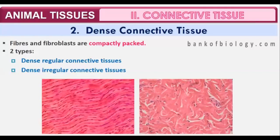Today we are going to start with the dense connective tissue. We have already studied loose connective tissue, including adipose and areolar tissue. Dense connective tissue differs because the fibers and fibroblasts are compactly packed, unlike in loose connective tissue where they are not. Dense connective tissue is of two types: dense regular connective tissue and dense irregular connective tissue.